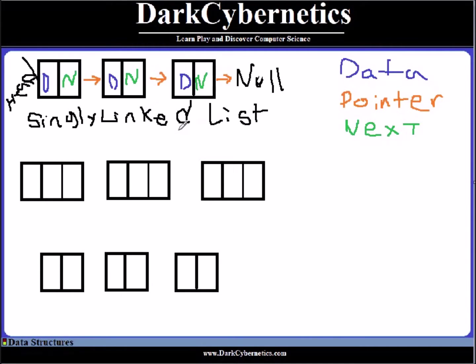Using linked lists has benefits but also drawbacks. Data structures like the linked list, the doubly linked list, and the circular linked list take up extra memory. With the doubly linked list, we have the idea of having a previous pointer — we just say P here — and there's a very little difference between these: previous and next.